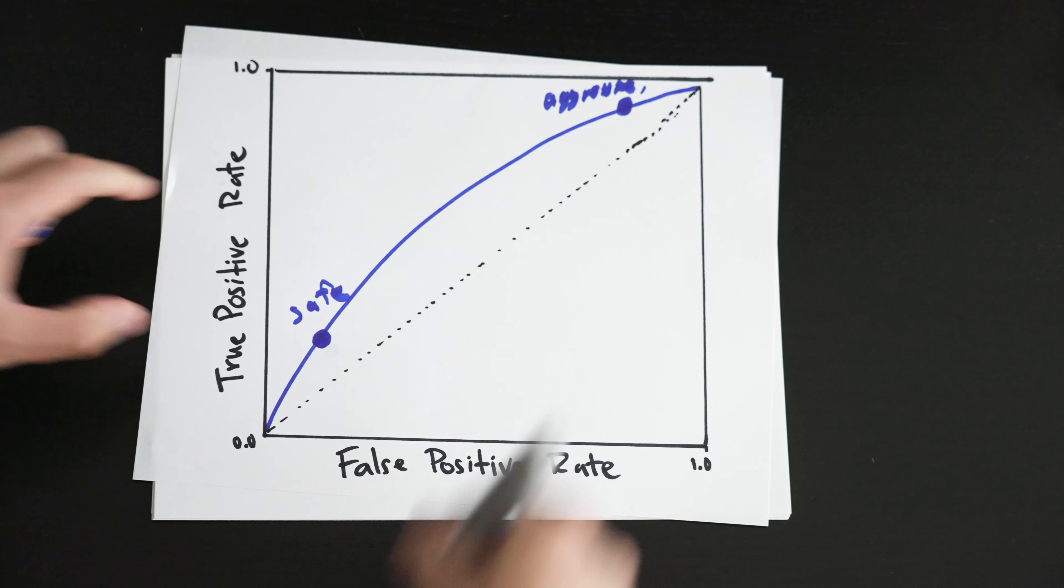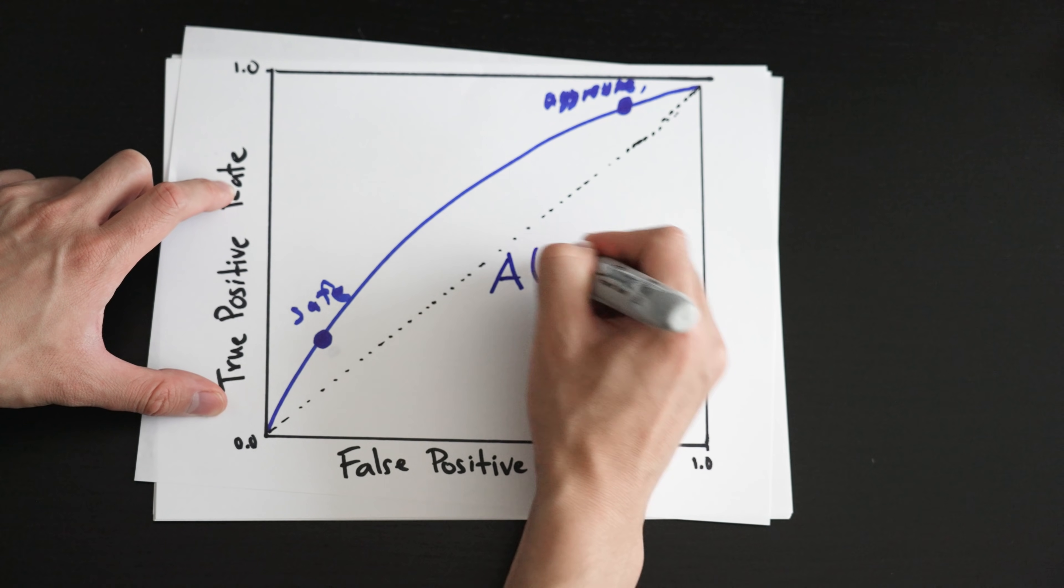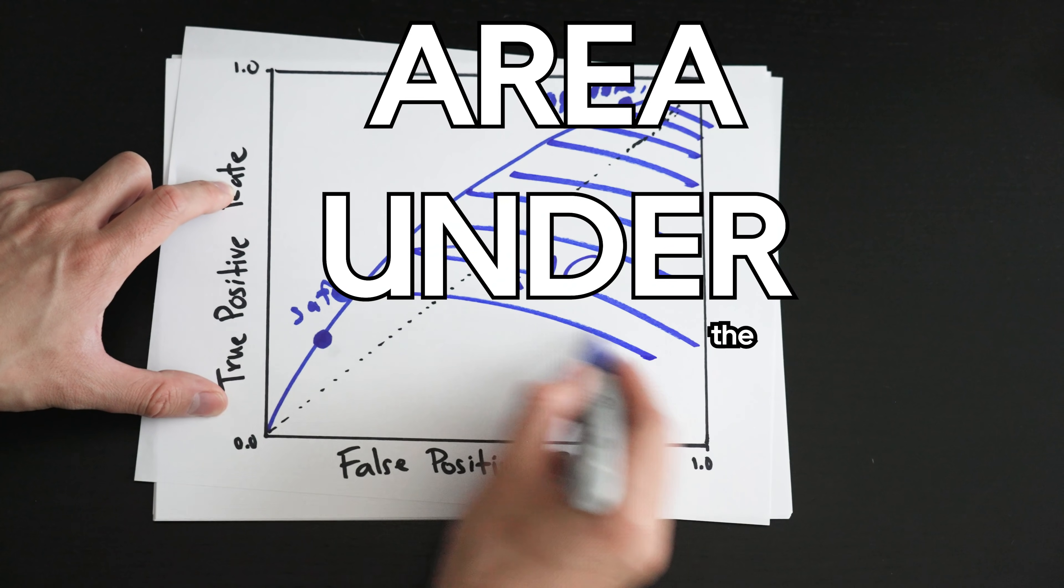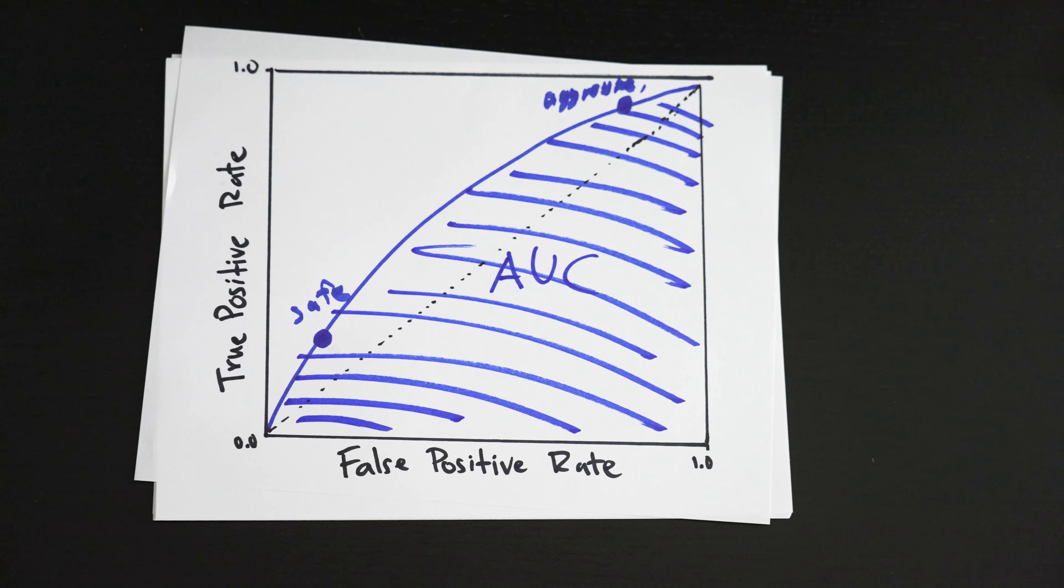So visually, it's kind of hard to say, hey, this is how my model is doing. Look at this curve. So we made another metric called AUC, which is area under the curve, which represents this area, and the larger the number, the better.